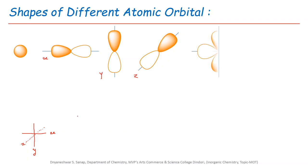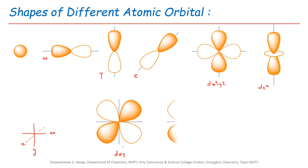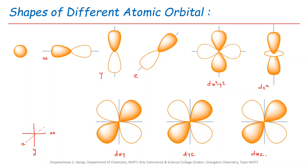The next type of orbital is D. D orbitals have five types: first, dx²-y² orbital; second, dz² orbital; third, dxy orbital; fourth, dyz orbital; and fifth, dxz orbital. In the case of D orbitals, the lobes of the dx²-y² orbital lie on the axes — on the x-axis and y-axis. For the dz² orbital, the lobe is along the z-axis only. For the other three orbitals — dxy, dyz, and dxz — the lobes lie in between the respective axes.